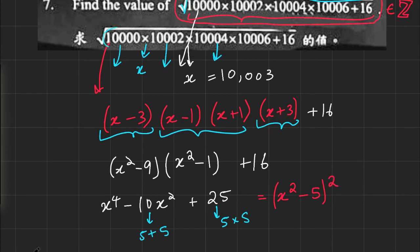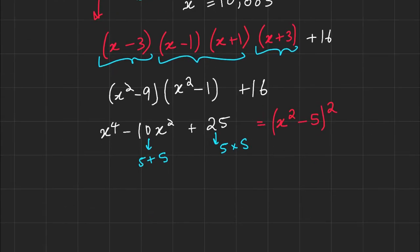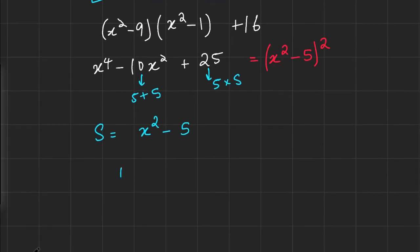And hey, that's the expression here inside the radical. So if I do take a square root of that, we see that the value that we have to evaluate (let's just call it S) is simply x² - 5, where x is 10,003.